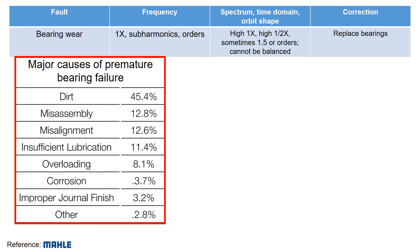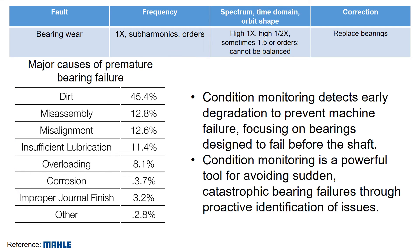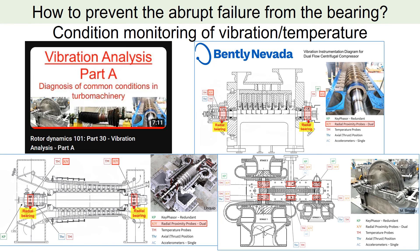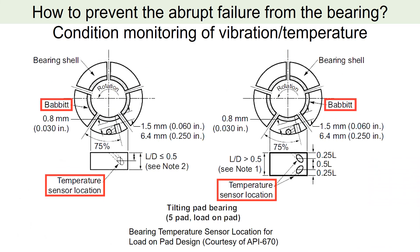We covered the major causes of premature bearing failure. To prevent these issues, condition monitoring is crucial. Condition monitoring detects early degradation, focusing on bearings designed to fail before the shaft to prevent catastrophic failures. It's a powerful tool for proactively identifying issues. In part A, we discussed where vibration and temperature sensors should be installed. API 670 specifies sensor locations, emphasizing the importance of accurate condition monitoring.